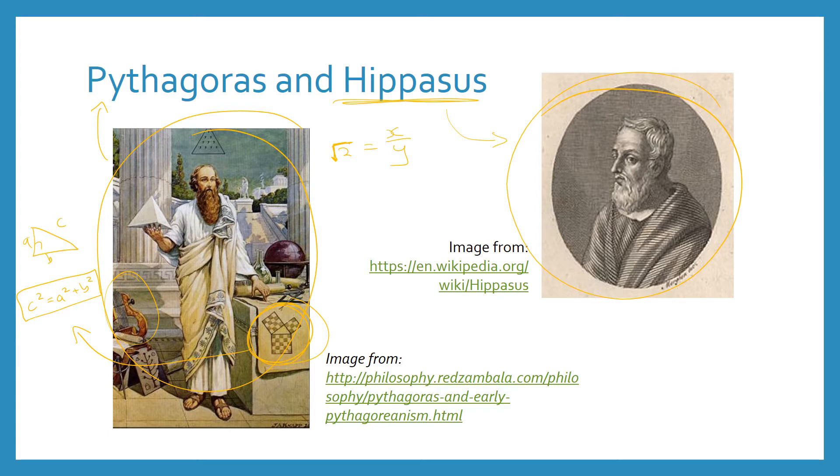And what Hippasus actually ended up doing, when trying to write the square root of two as a rational number, or as a fraction of an integer over an integer, he ended up proving that this was actually impossible. As a result, Pythagoras and the Pythagoreans, the people who followed Pythagoras' teachings, ended up killing Hippasus.